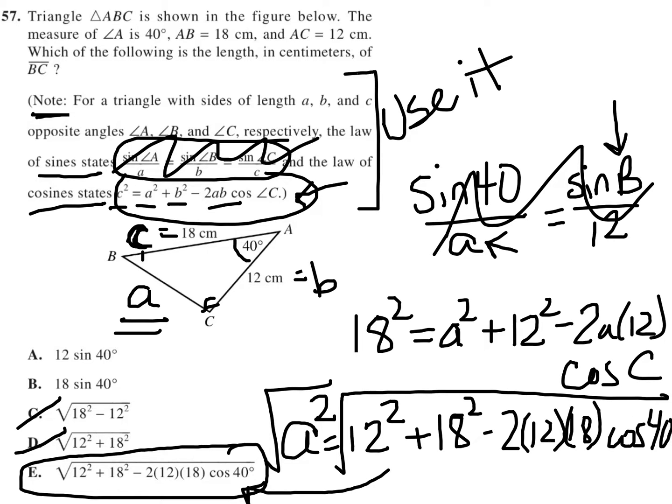D and C were no good from the start because they don't contain sine or cosine, and whenever we have a note we're going to use it. A and B contain sine, but when we try to use the law of sines it doesn't work. There's no way to rearrange things with the law of sines, so A and B don't work. So really E was the only good answer from the start, even if we just used process of elimination, but we can see by using the actual math that E checks out.